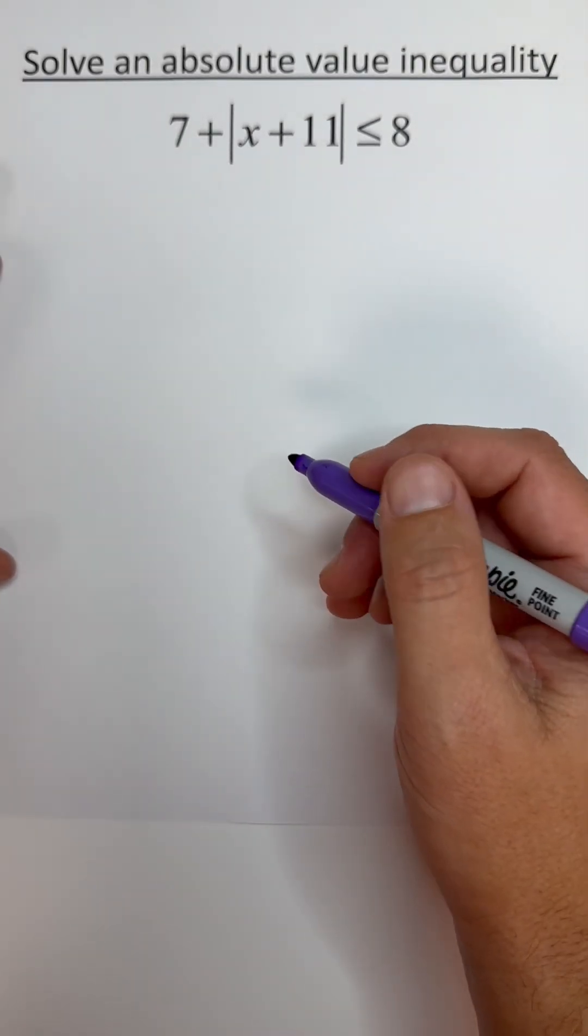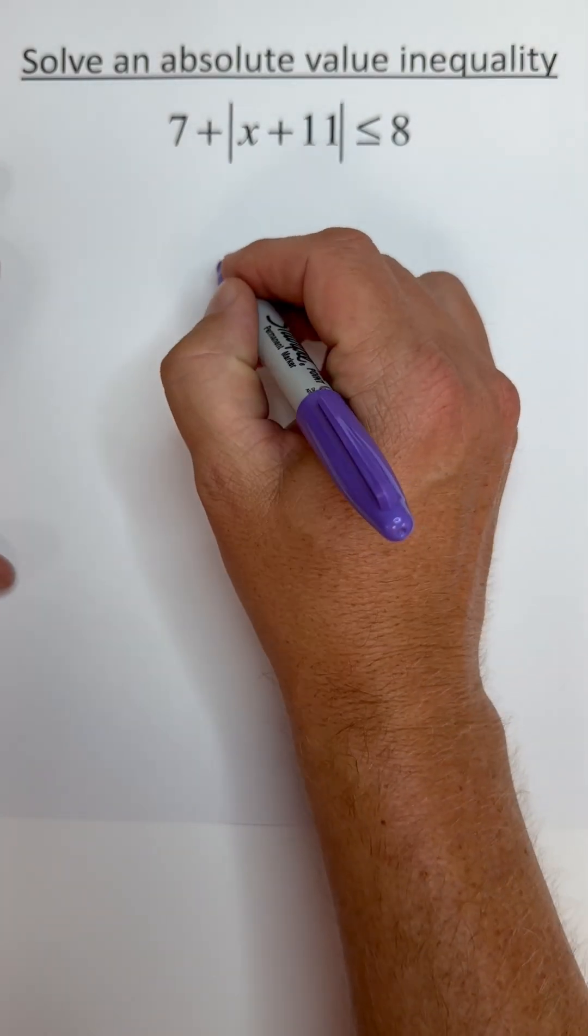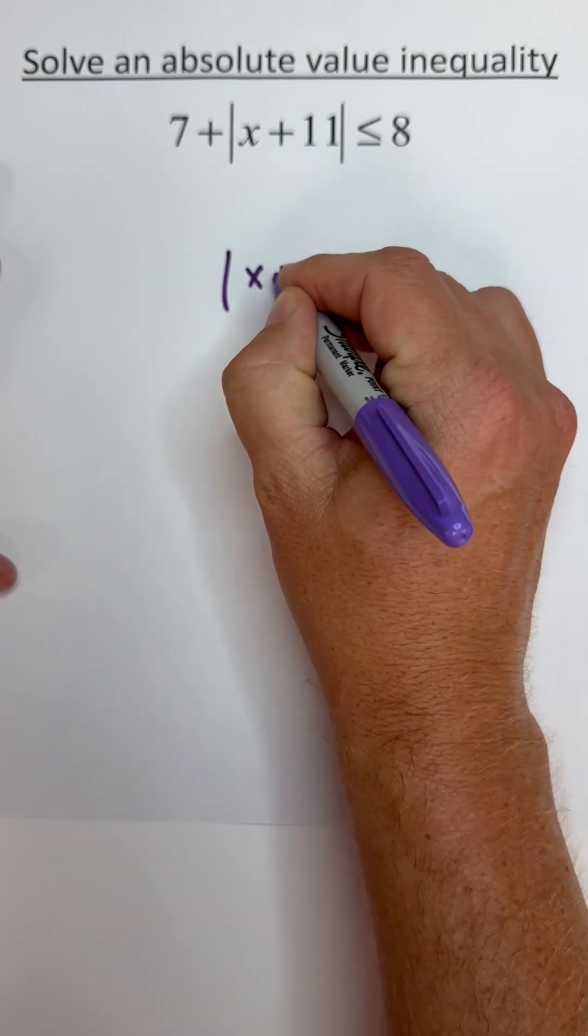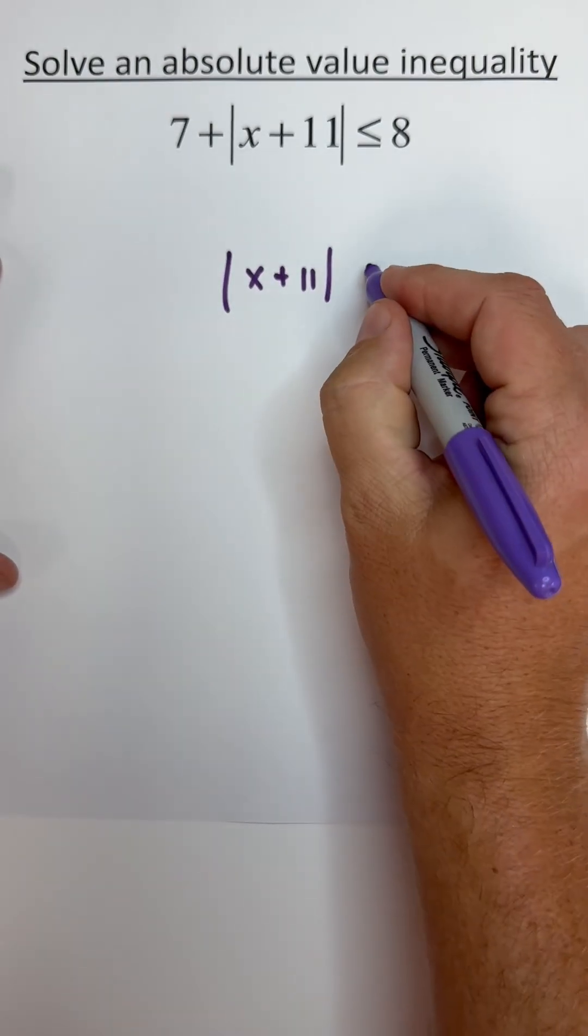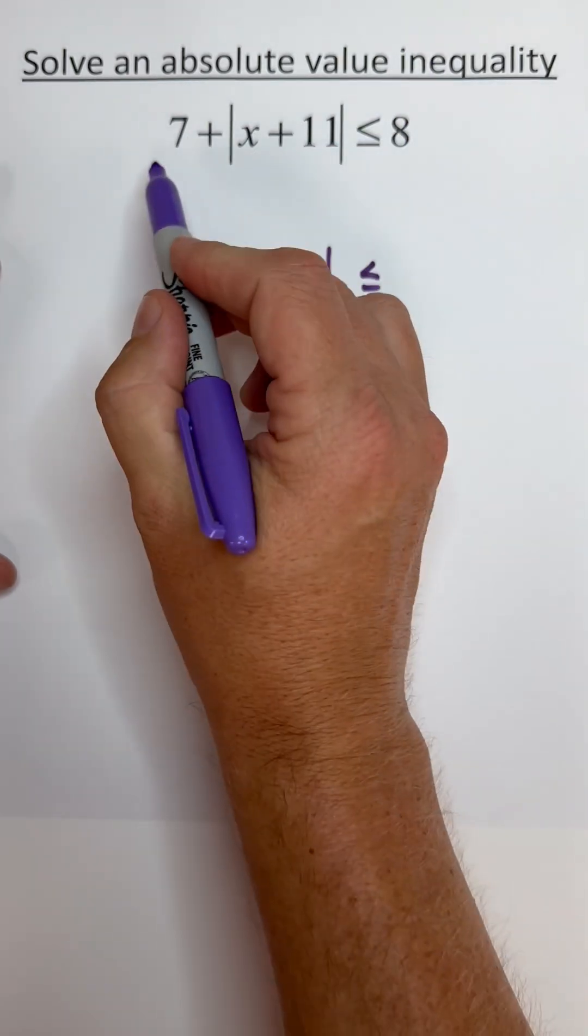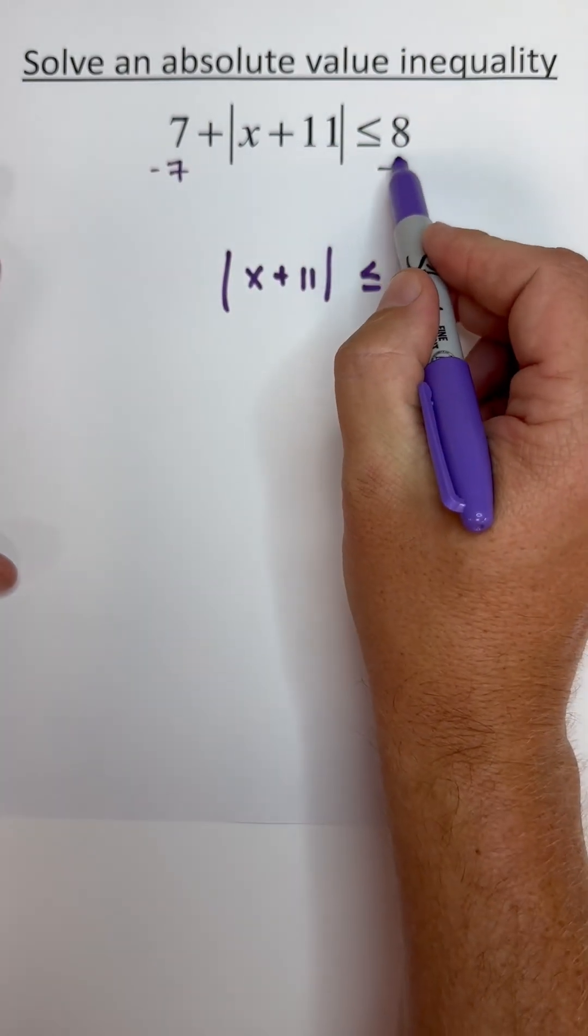Here we're going to solve an absolute value inequality. The first step is to get the absolute value part of the problem all by itself. So just like in an equation, we're going to start by moving this constant term. Subtract the seven.